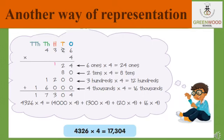The same sum can be represented in another method. 4326 into 4. First, 4 multiplied with 6: 4 sixes are 24, write as it is. Now go to the next line to multiply 4 with 10's, adding one 0 below. 4 twos are 8. Go to the next line, add 2 zeros, and multiply 4 with 3: write 12. Go to the next line, add 3 zeros, multiply 4 with 4: 4 fours are 16. Now add all these digits and we get the answer as 17,304.